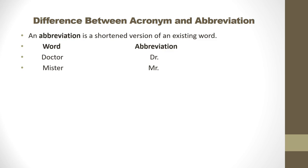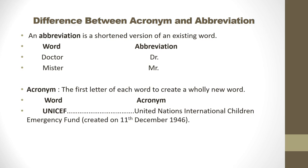Now I talk about the difference between acronym and abbreviation. An abbreviation is a shortened version of an existing word — for example, DR followed by a full stop, and MR written as capital M and lowercase R followed by a full stop. An acronym, on the other hand, uses the first letter of each word to create a wholly new word. For example, UNICEF stands for United Nations Children's Emergency Fund, created on 11th of December 1946.